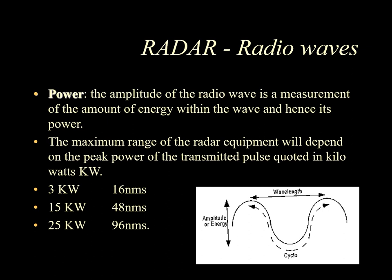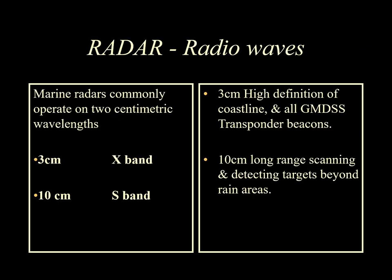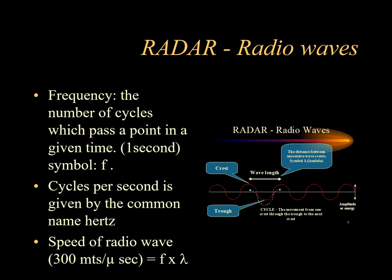Energy loss for the pulse is proportional to the square of the distance traveled, so the echo decreases as the square of the distance. An echo from long range can be very weak compared with the high power pulse transmitted — it could be at a millionth of the original strength. The maximum range of the radar will depend on the peak power of the transmitted pulse, often rated in kilowatts. For example, 3 kilowatts may reach up to 16 nautical miles, 15 kilowatts up to 45–48 nautical miles, and 25 kilowatts up to 100 nautical miles.